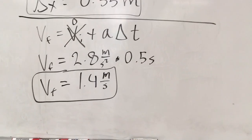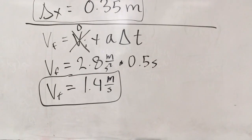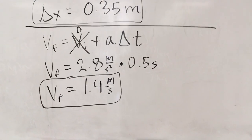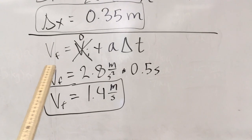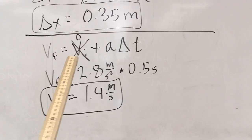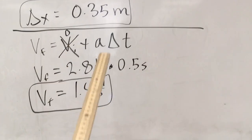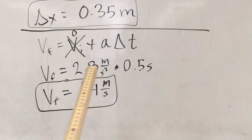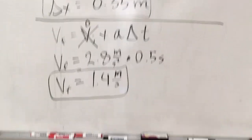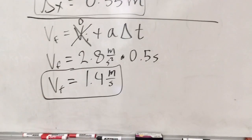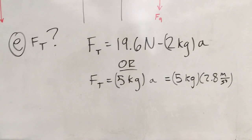That's a pretty simple one-dimensional kinematics problem — the hard part was finding the acceleration, which we've already done. For Part D, which asks for the final velocity after 0.5 seconds, we use the first kinematics equation. Initial velocity is zero, and we know the acceleration and delta t, so we plug those in and solve for final velocity.